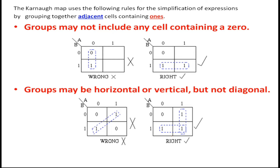The Karnaugh map uses the following rules for simplification by grouping together adjacent cells containing ones. This word 'adjacent' is very important — adjacent cells containing ones. Groups may not include any cell containing a zero. If a cell's output column says it is zero, zero cannot be clubbed with one. I cannot group a zero with a one, even though there is adjacency.